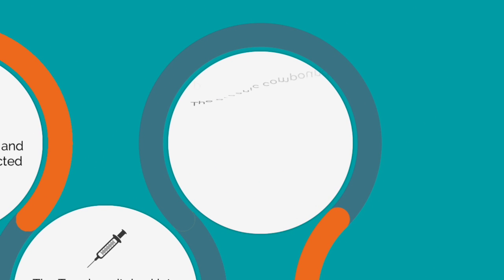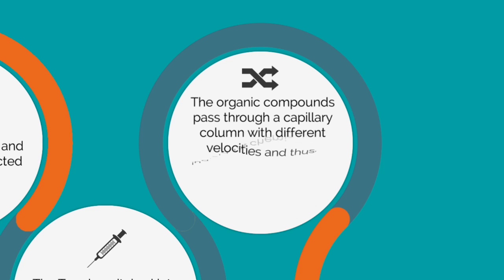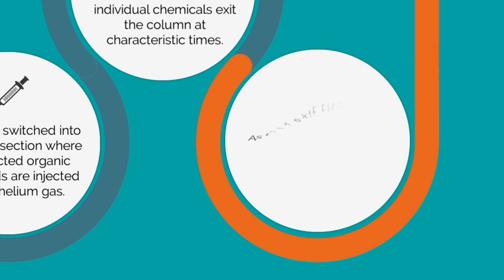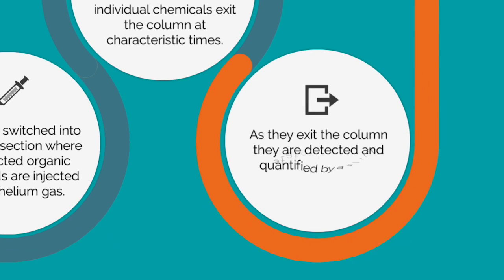The organic compounds pass through a capillary column with different velocities, and thus individual chemicals exit the column at characteristic times. As they exit the column, they are detected and quantified by a solid state detector.